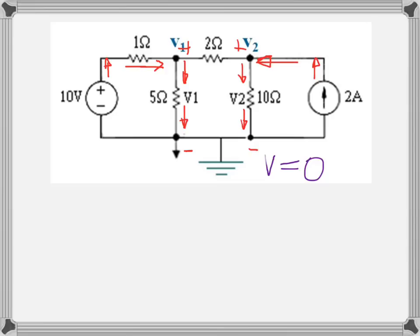There is one current left — the current between V1 and V2. It's hard to say exactly whether the current goes right or left, so in nodal analysis you sometimes need to guess. The most important thing is to be consistent and use the direction you choose. Let's assume the current goes from V1 to V2, to the right. Now we have all currents ready, and we need to express each current using Ohm's law to find voltages V1 and V2.